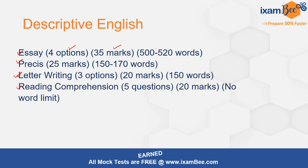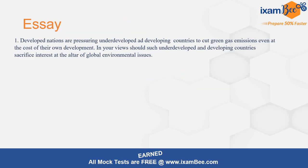For essay it was 35 marks, and the word limit was 500 to 520 words. For precis it was 25 marks, word limit 150 to 170 words. For letter writing there were three options — 20 marks and 150 words. For RC there were five questions from a passage, worth 20 marks, with no word limit. The passages for precis and RC were completely different.